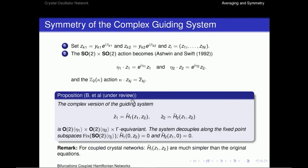What we can do now is turn to complex coordinates. And in complex coordinates, the SO2 action becomes an S1 equivariant on the equation. And the kappa action becomes complex conjugation. And what happens is that the complex version is now O2 cross O2 cross gamma equivariant, and the system actually decouples along the fixed points of spaces of fixed SO2. And for coupled crystal networks, these HI hat equations are really much simpler than the original equation.